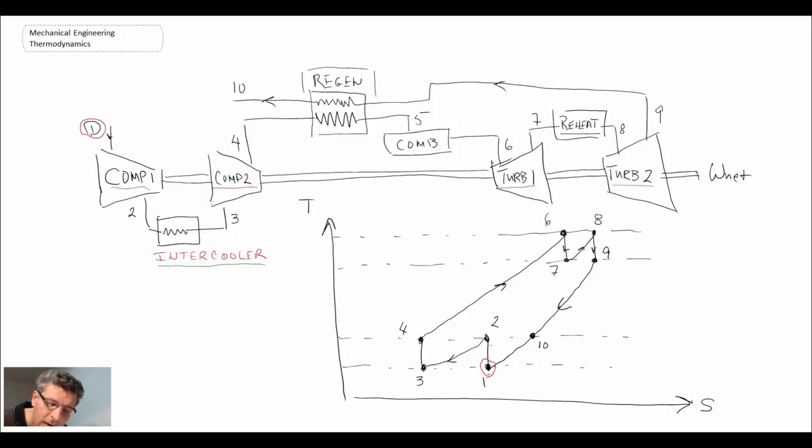We then compress in the first compressor, taking us to state two on our schematic. We then go into intercooling, reducing the temperature of the gas, bringing us to state three. We then go into another compression stage, taking us to state four.